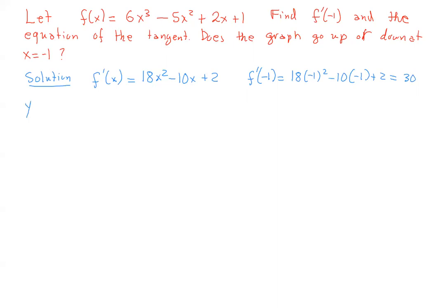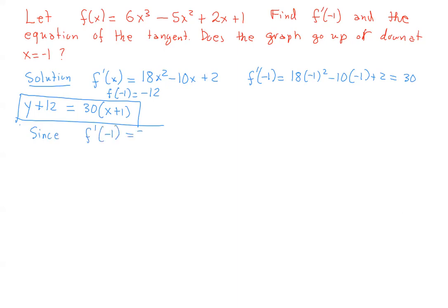For the tangent equation we need f(-1) = -6 - 5 - 2 + 1 = -12. So the equation is: y - (-12) = 30(x - (-1)), that is, y + 12 = 30(x + 1). Since f'(-1) = 30 > 0, the graph of f(x) goes up at x = -1.